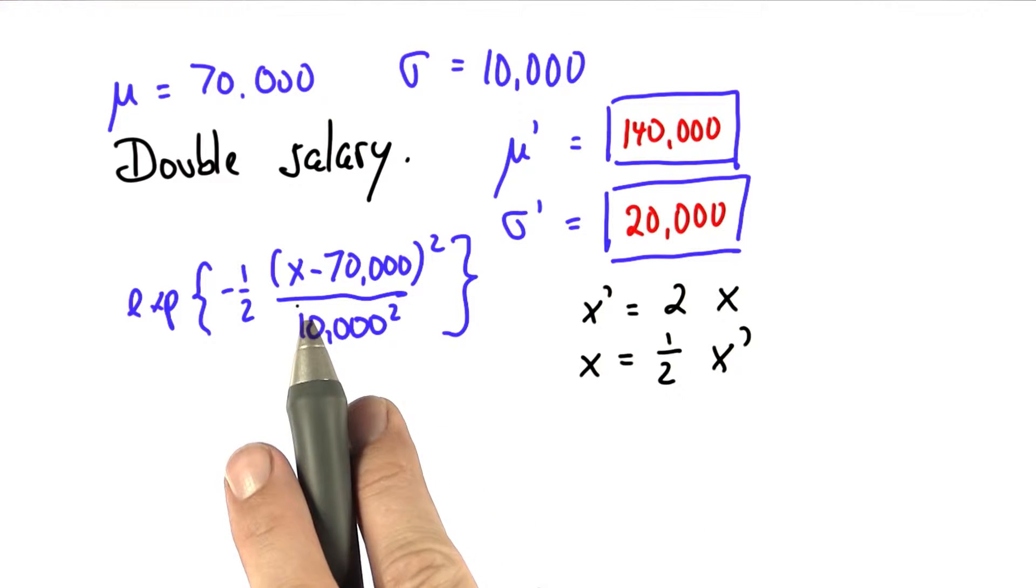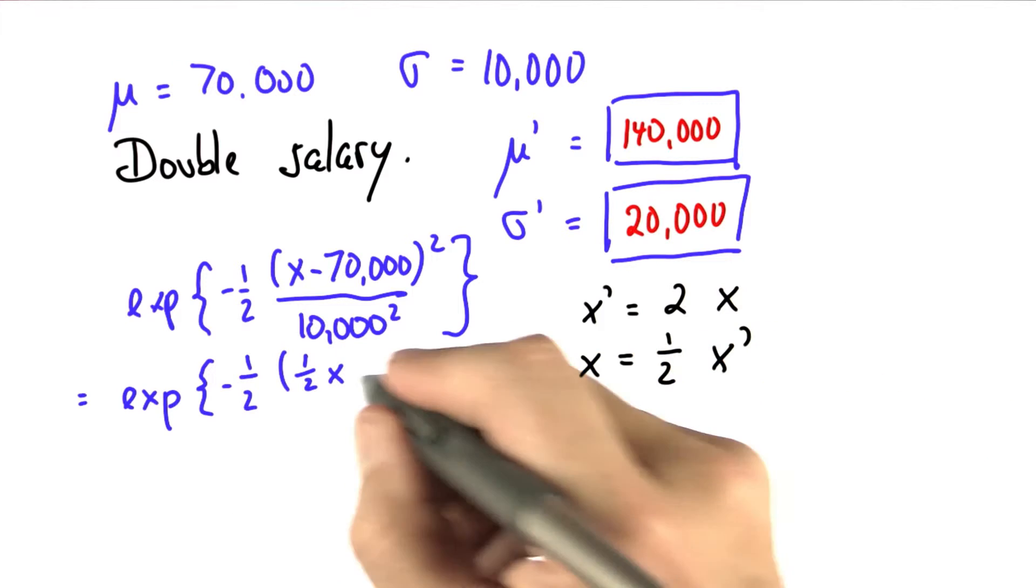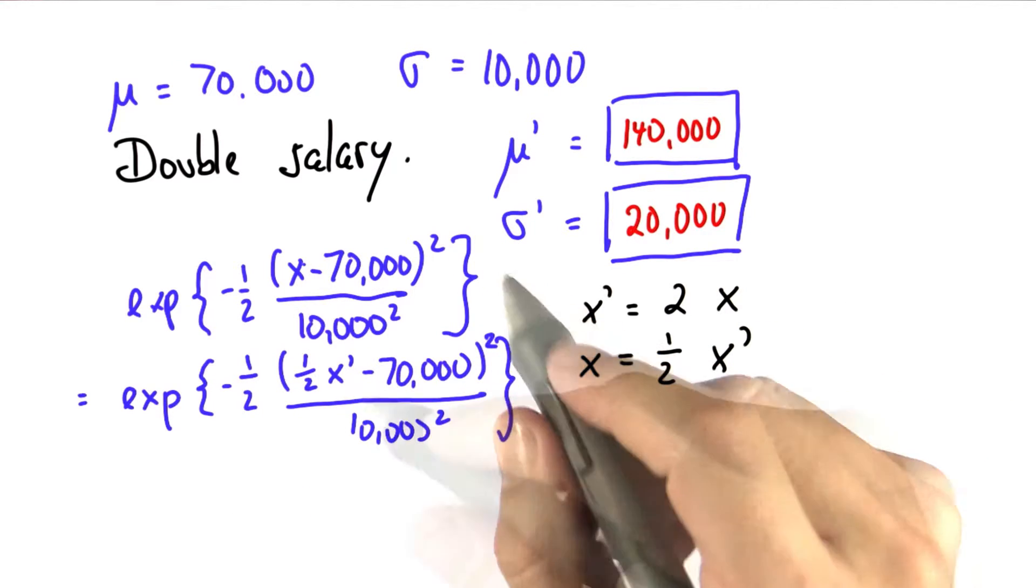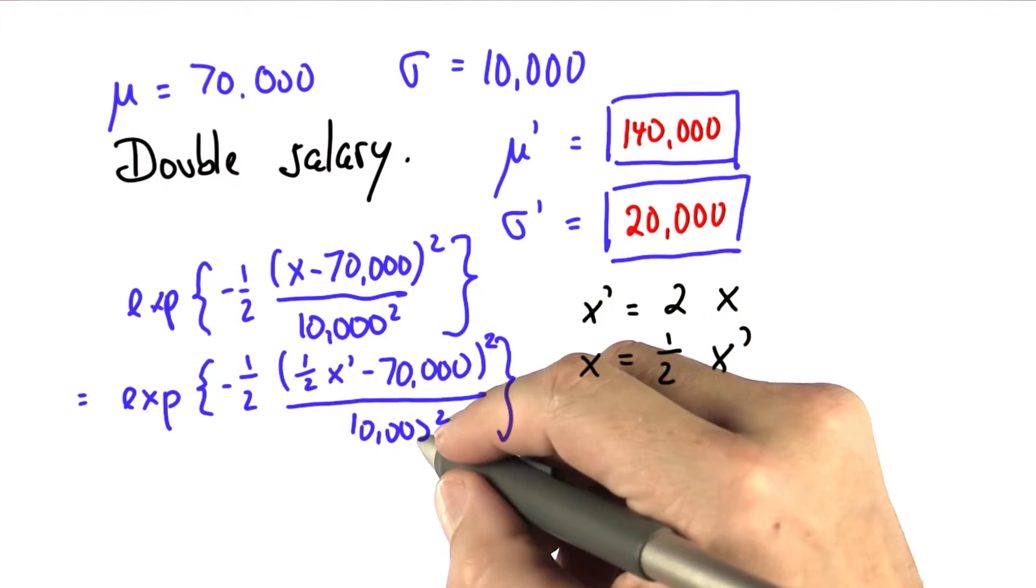If I substitute this into the formula over here, I get the same exponential expression, but now with a half x prime where the x used to be. Now the trick is to deal with the half, and that's more complicated than the case before.